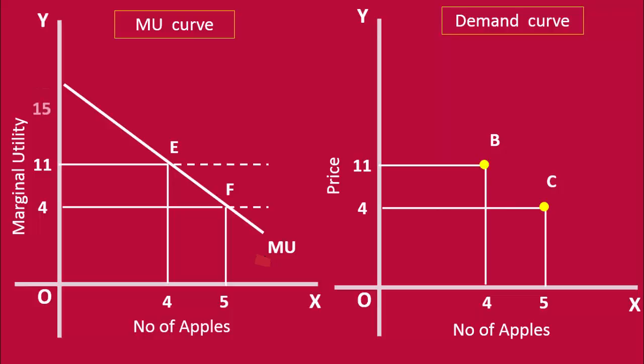If the price goes up from 4 rupees to 15 rupees, once again the consumer's equilibrium is affected. Marginal utility is less than the price. If he continues to buy 5 apples at 15 rupees, he is a loser. The loss is shown by the colored area.